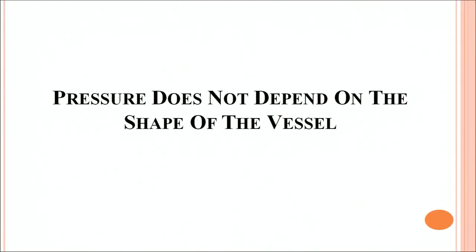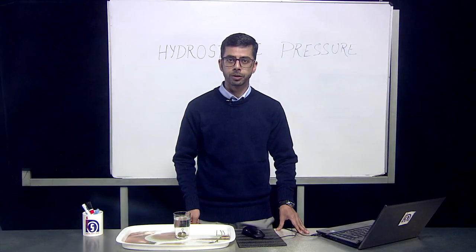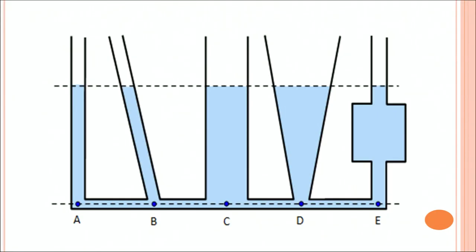Pressure does not depend on the shape of the vessel. And to prove it, we are showing this diagram. Here you can see there are different shapes of the vessel, but the level of the water lies to be same. And we know that the pressure is given by the product of height, the density of the liquid, and the gravity. Therefore, in all the four apparatuses, the pressure is same. We had already denoted the amount of pressure at certain points, and they are denoted by the points A, B, C, D, and E. And at those points, the amount of pressure applied by those liquids are same.